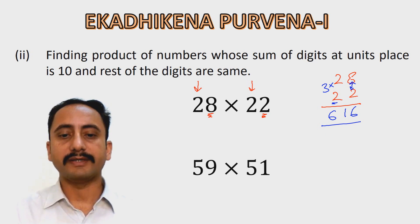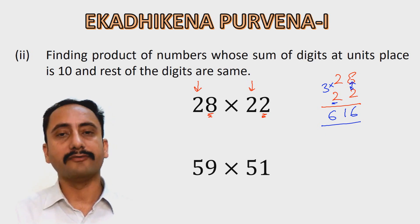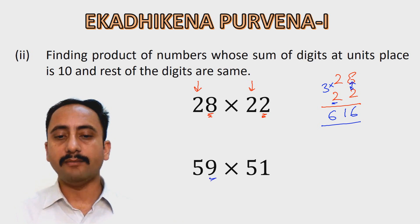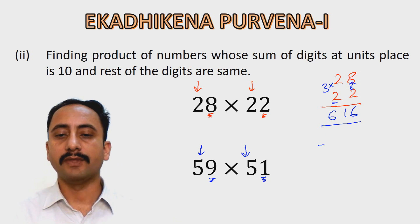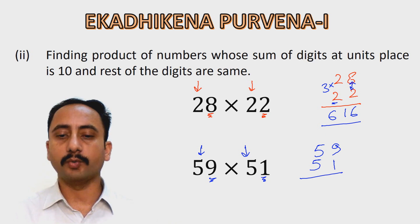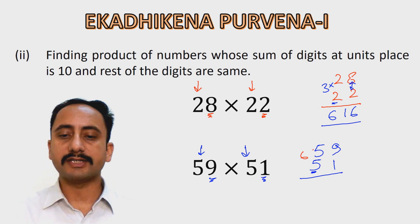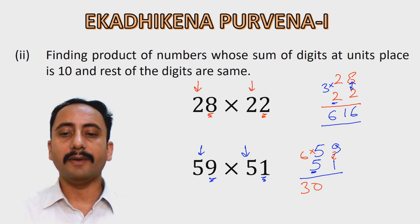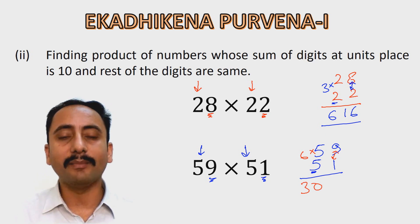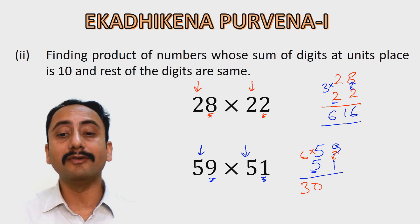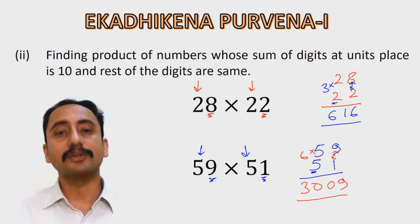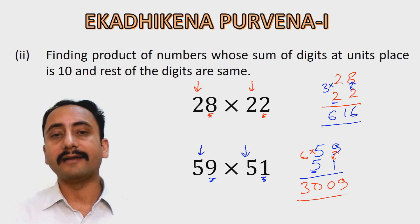Next example: 59 multiplied by 51. Again, the sum of digits at the units place is 10 and the rest of the digits are the same. One more than 5 is 6, and 6 multiplied by 5 is 30. Then 9 multiplied by 1 is 9 — but be careful, you write 09, not just 9. So the product is 3,009.